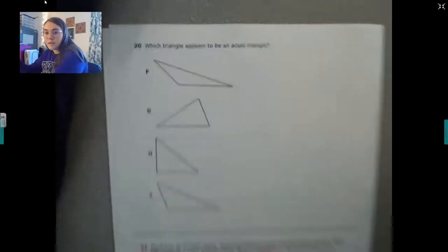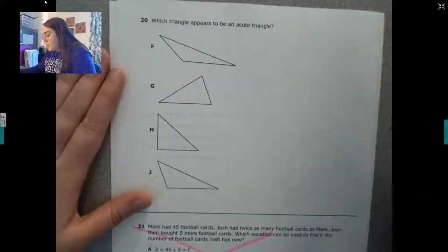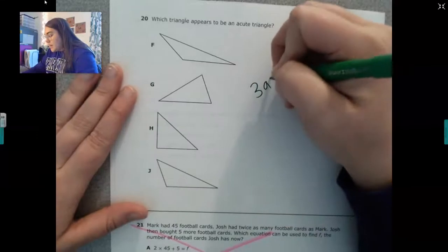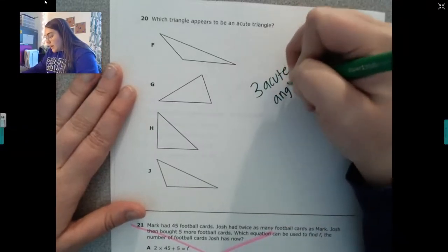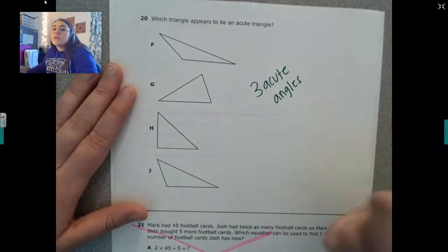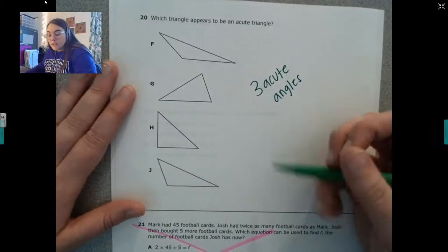Which triangle appears to be an acute triangle? Now remember, an acute triangle has three acute angles. So I want you right now to pause the video and figure out which one you think is the correct answer.